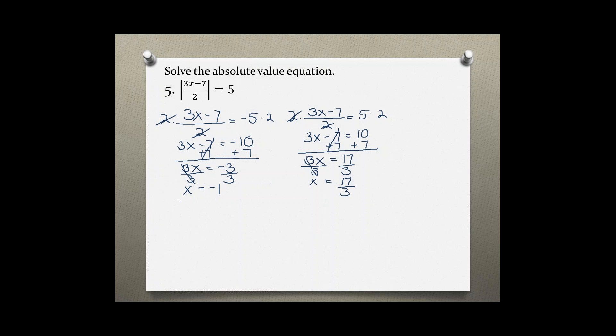To check if these two solutions are true, we have to go back to the original problem and plug our solutions in. So the first one would be 3 times negative 1 minus 7 over 2 is equal to 5.